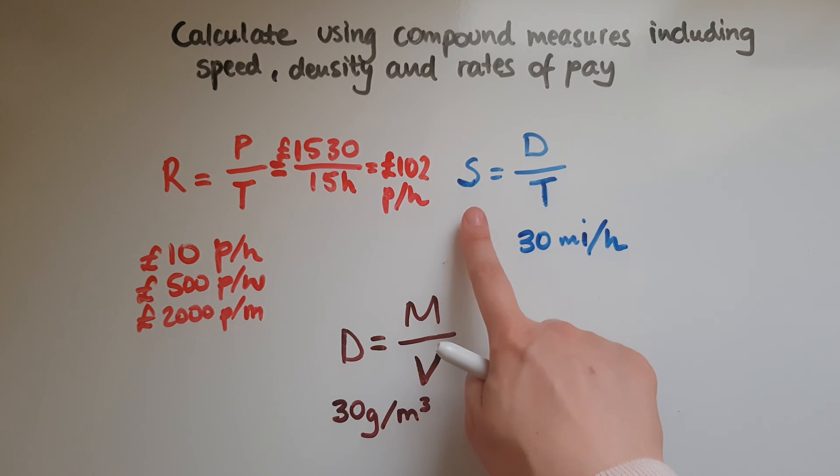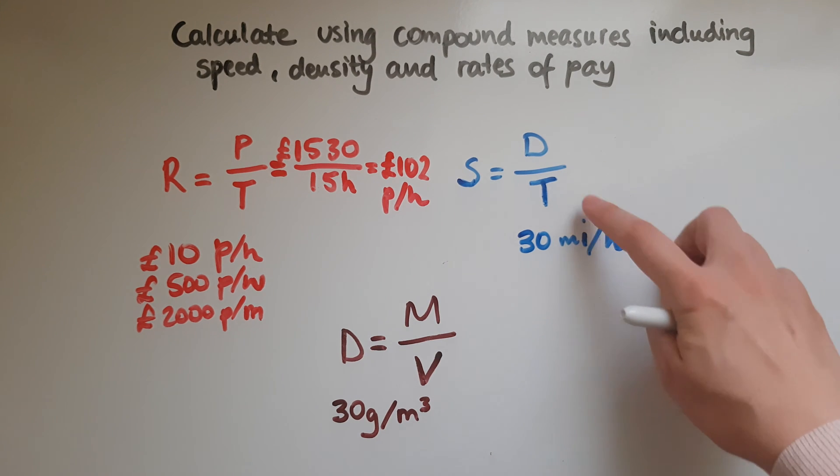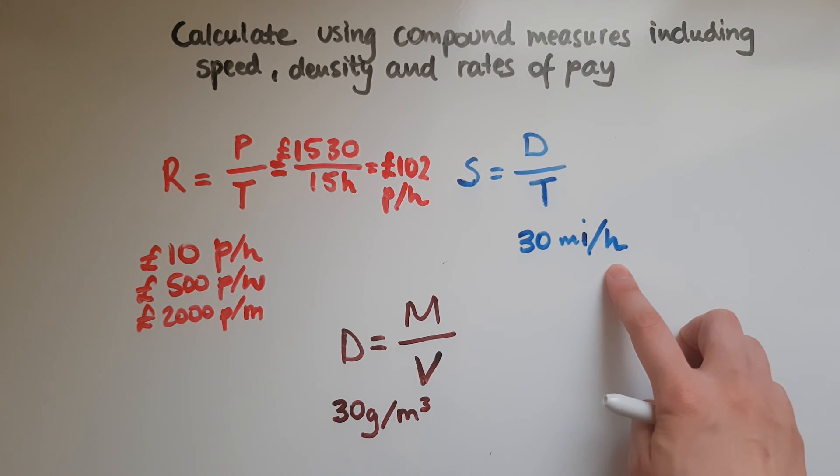So speed is worked out by dividing the distance, which is in this case 30 miles, it could be 50 kilometres, over time. So we've got that time here, given in hours, but it could be in minutes, in seconds.